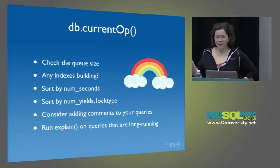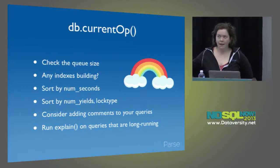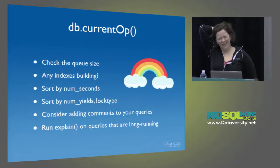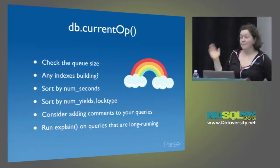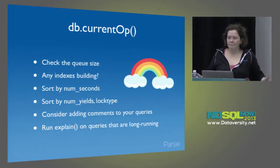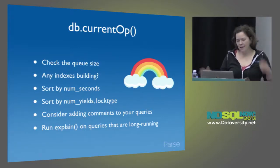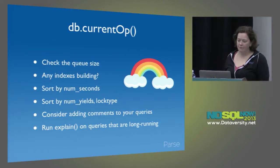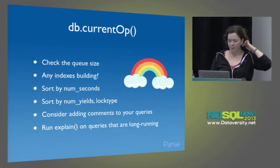One wacky thing about db.currentOp is it doesn't always print out all the information about an op — sometimes it doesn't print the namespace or the query output. Something you can do in most drivers is add comments to your queries containing the entire query, and then you can search for that. Once you have the query you think is a problem, you can run explain on it, get a feel for what's wrong — maybe you're missing an index, scanning too many documents, or returning too many results.